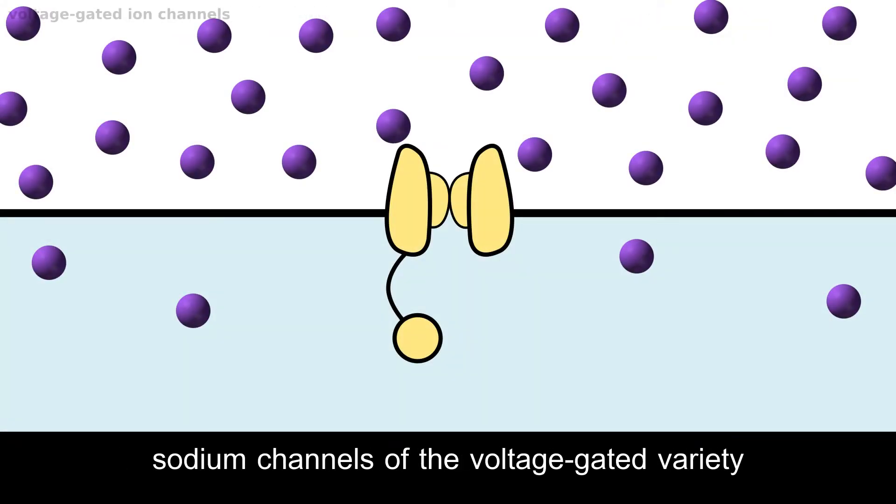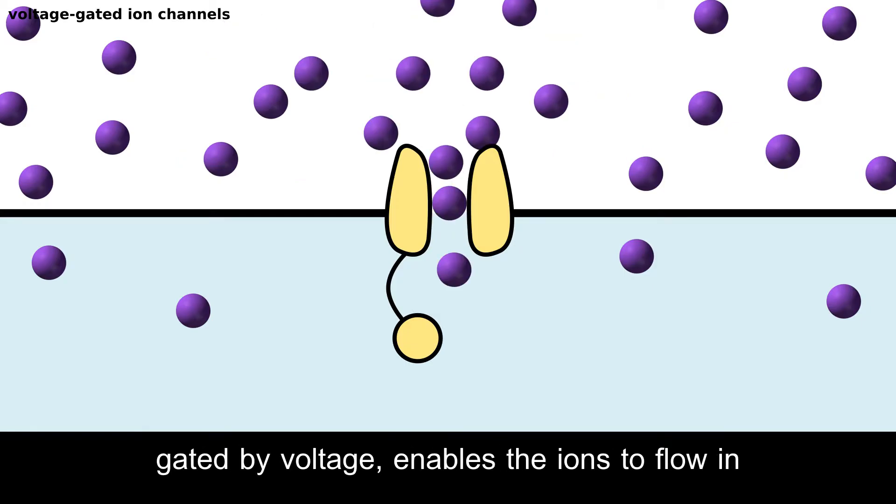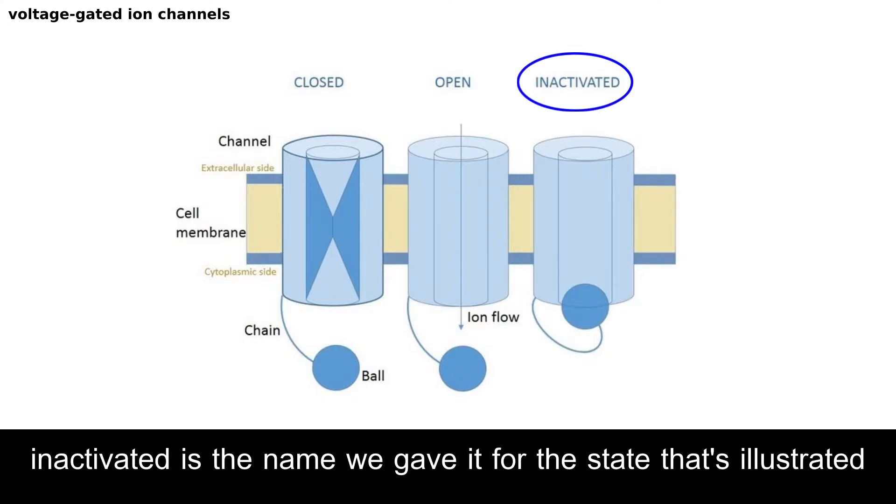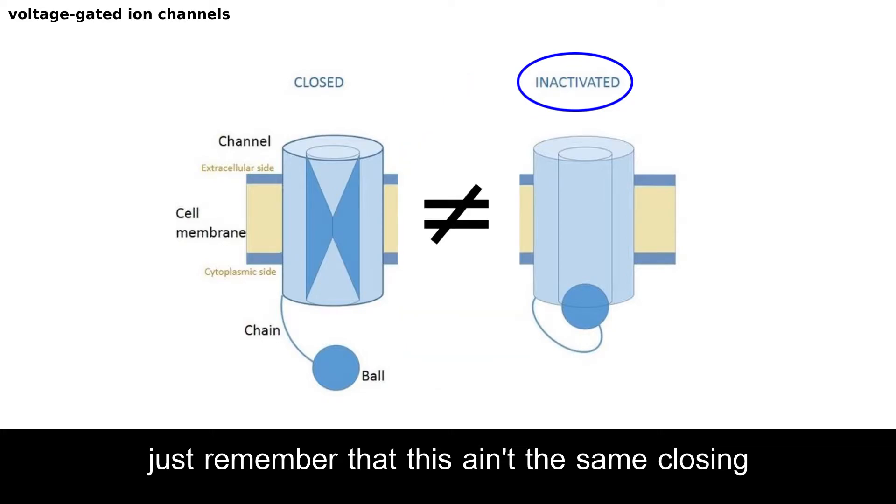Now it's time to talk about sodium channels, voltage-gated variety. Gated by voltage, enables the ions to flow in. It can be closed, it can be open, it can be blocked by the globular protein. Inactivated is the name we gave it for the state that's illustrated. Just remember that this ain't the same as closing.